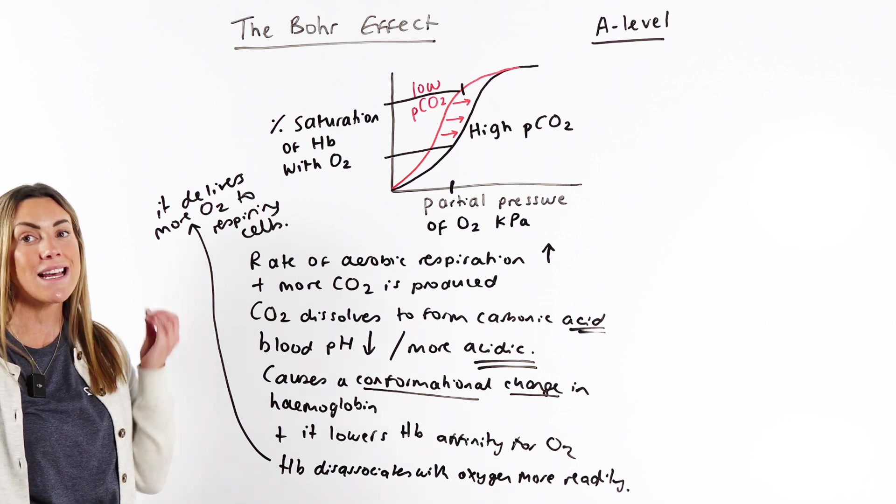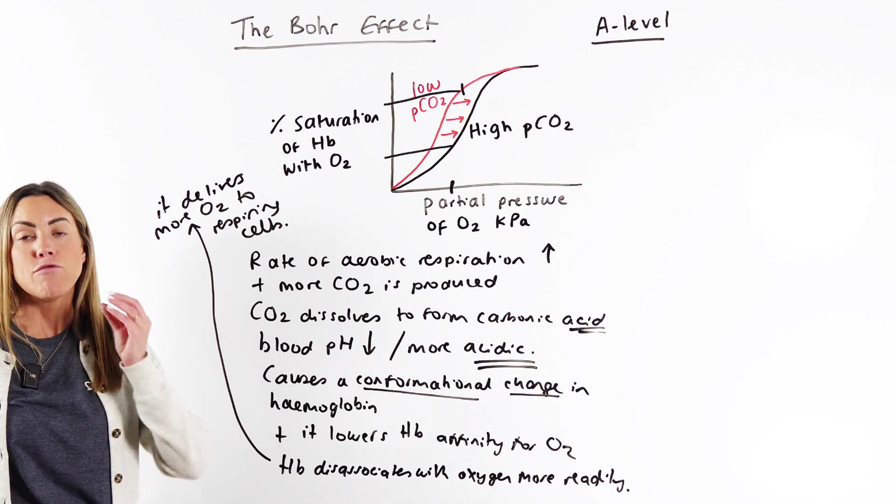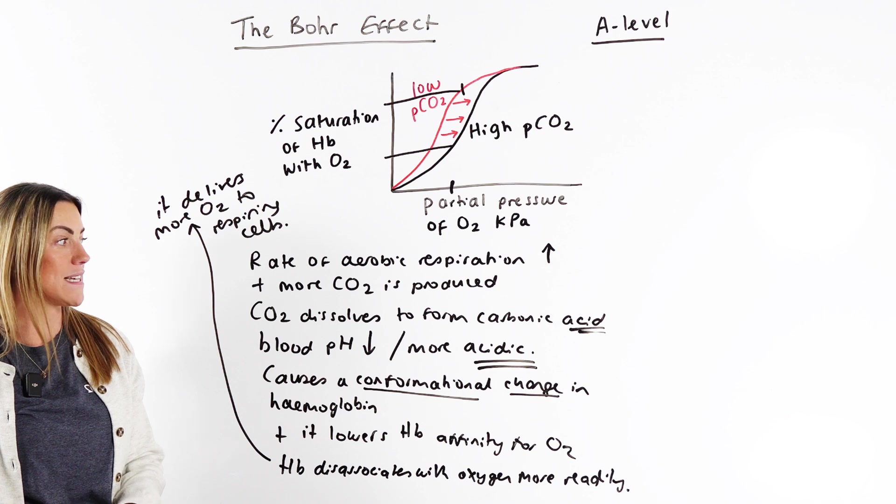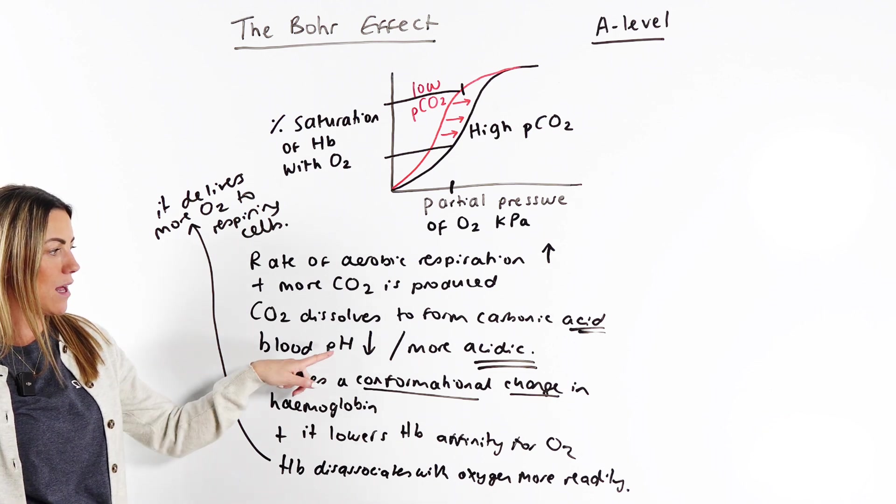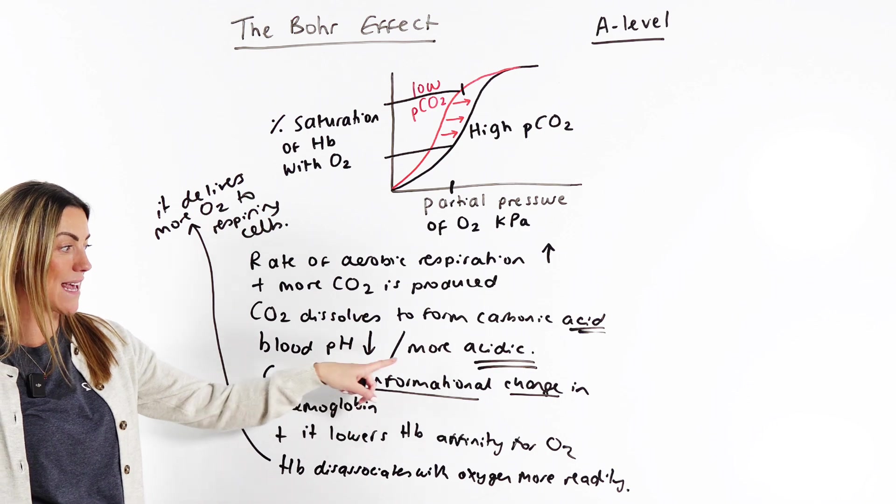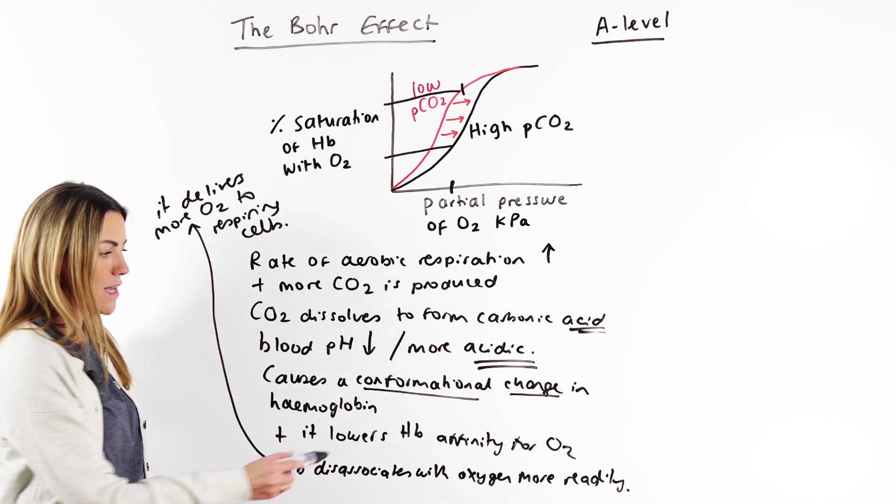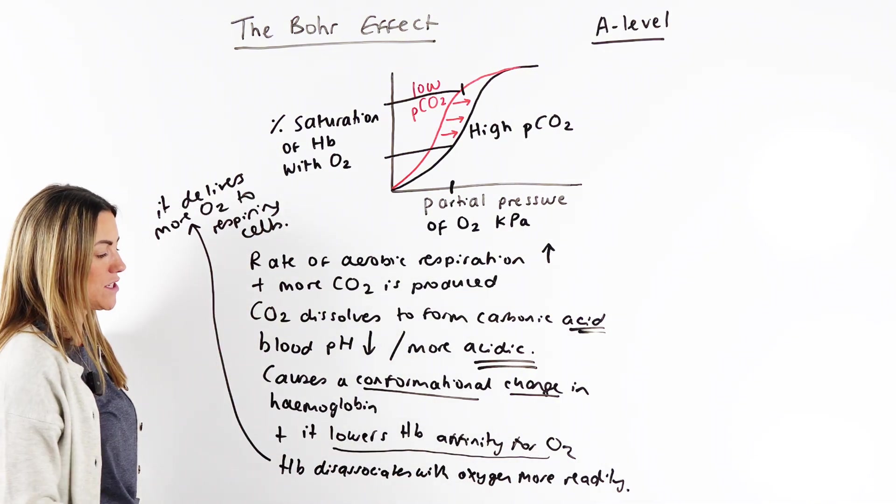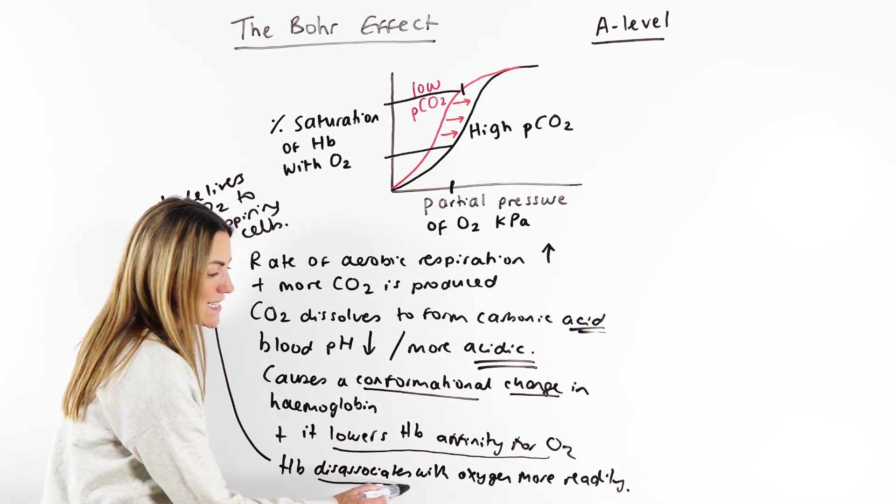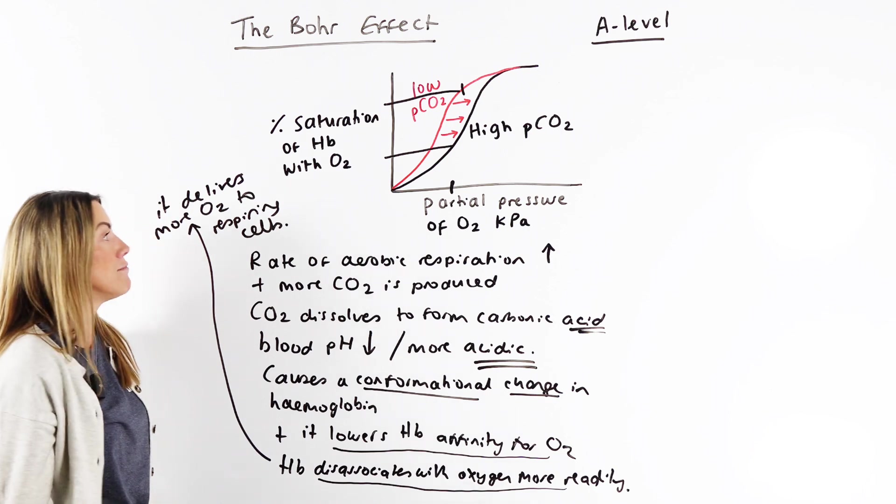I hope that's explained the Bohr shift. Remember, key terminology for this topic is key. So using words like: decrease in blood pH causes a conformational change in hemoglobin. We're lowering hemoglobin's affinity for oxygen and hemoglobin dissociates with oxygen more readily.